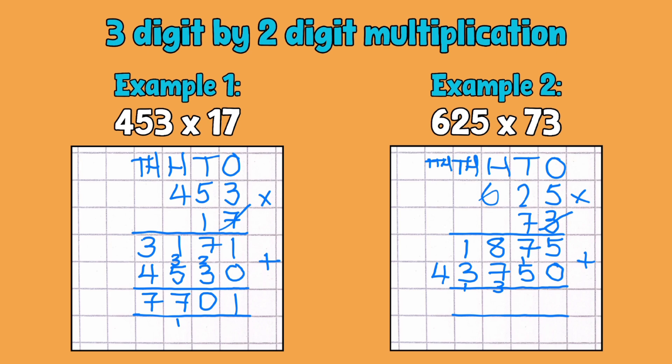Again, because I've partitioned 70 and 3, I need to put that back together again. So we just simply do that by adding up. So 5 add nothing is 5. 7 add 5 is 12. 8 add 7 is 15. Add the 1 is 16. 1 add 3 is 4. Add the extra 1 that we've carried over is 5. And nothing in that column makes 45,625.